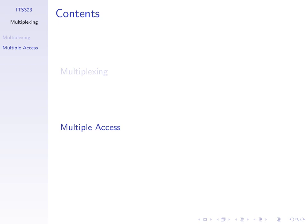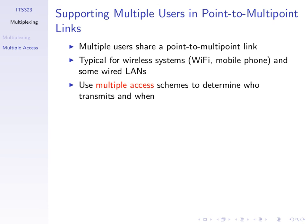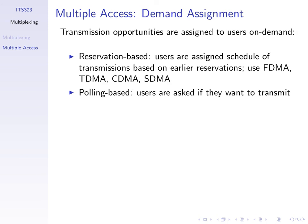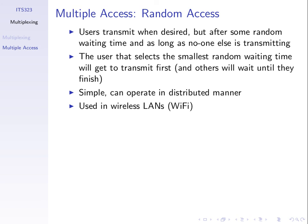Multiple access addresses the same sharing problem but for point-to-multipoint links, such as Wi-Fi, where multiple computers want to transmit to a single access point. If two users transmit at the same time they interfere. Multiple access techniques ensure users share the link efficiently. They include variations of FDM and TDM, polling-based techniques, and random-based techniques, though these will not be covered in this course.